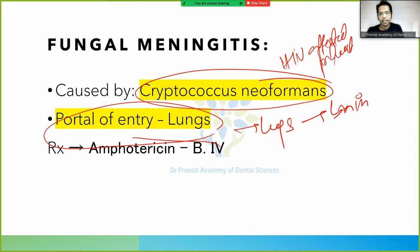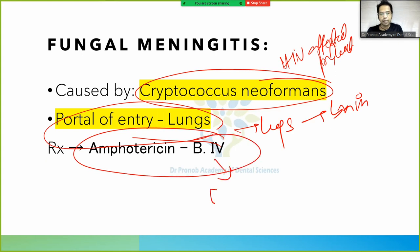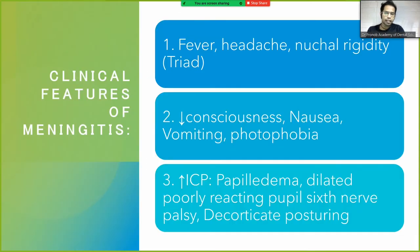Treatment for fungal meningitis is Amphotericin B given intravenously. Other drugs do not work well for this severe condition, so we use Amphotericin B IV.